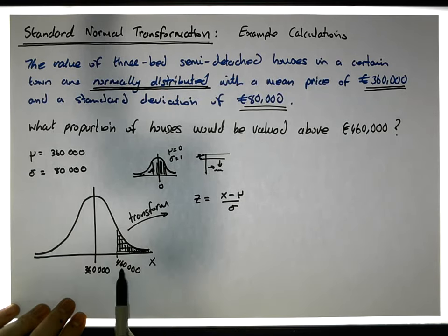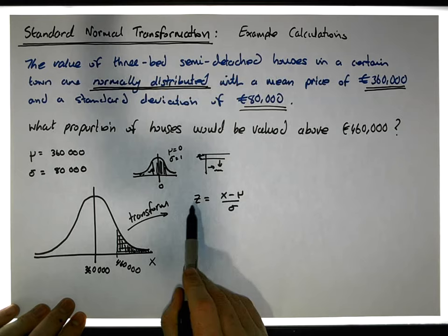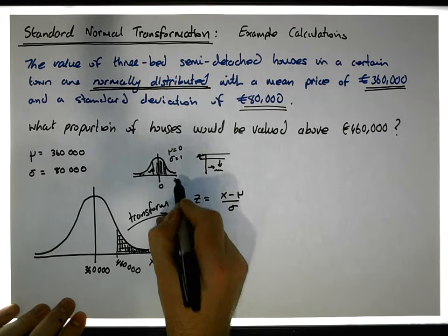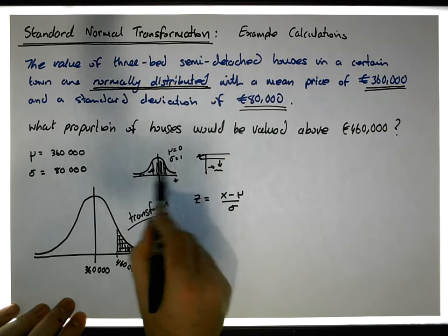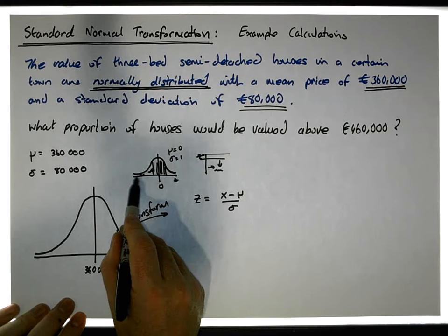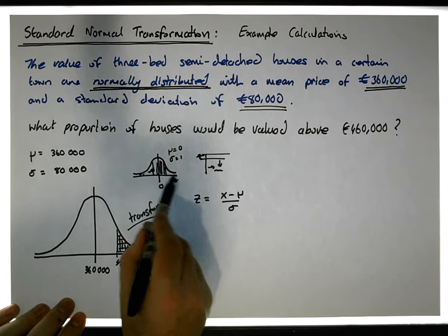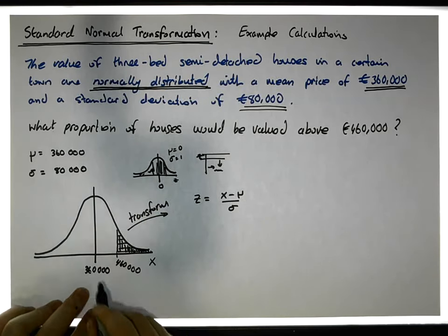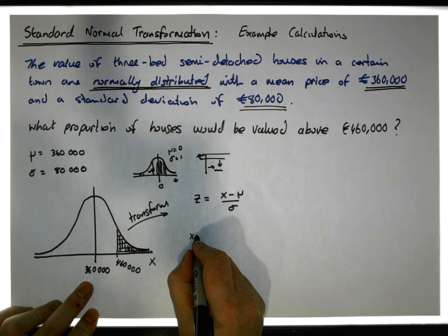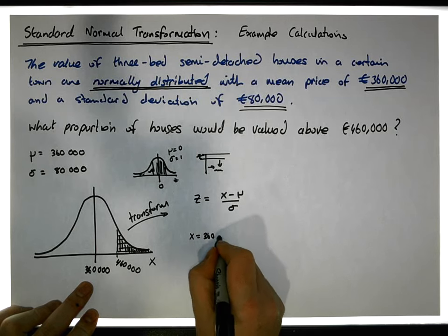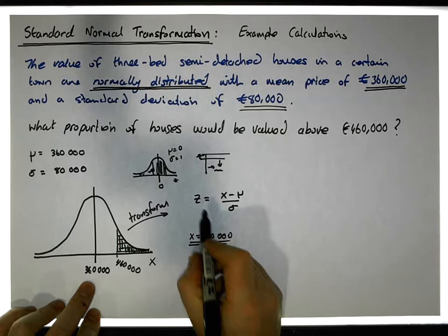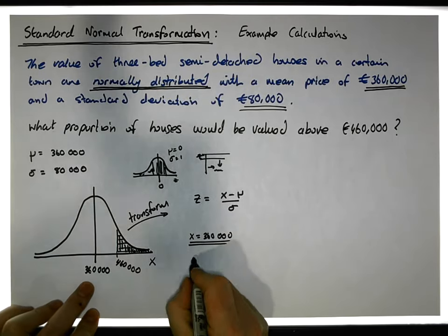Why don't we take all of these x values and plug them into this formula to see what the associated z scores or z values are that are positioned on the standard normal curve? Let me take my first x, which equals 360,000 euros. Here's the first x we're going to use. What's the z that comes along with this? Well, the z will be...